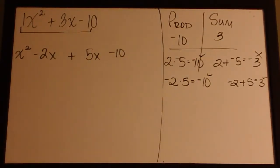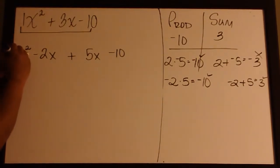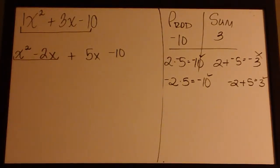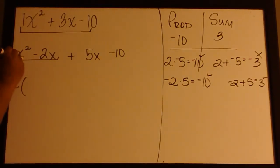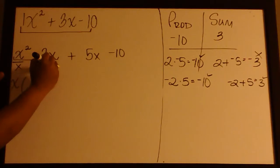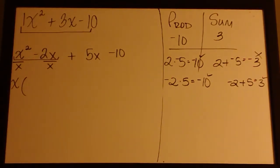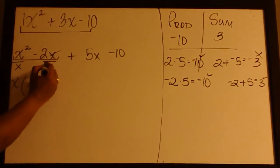Now we will factor by grouping. So let's focus on just this first group here. Notice that x is common to each term. So taking out the x with the lowest exponent, I will take out x. And then to determine what goes in the parentheses, I will divide each term by x. x squared divided by x is x. The x is cancelled here, and we are left with a negative 2.